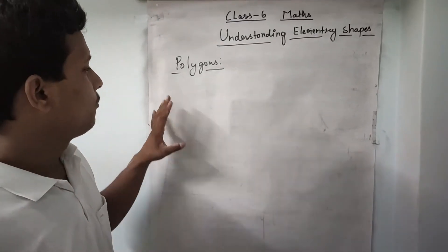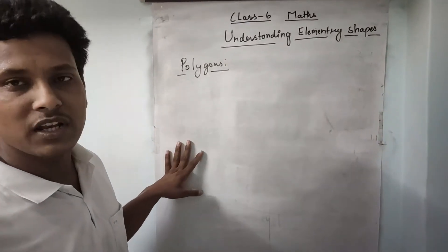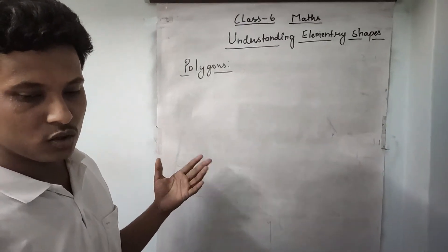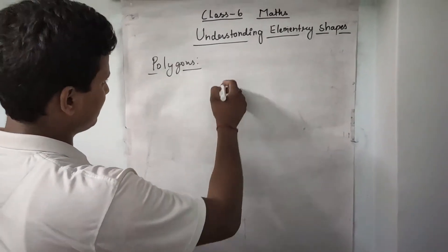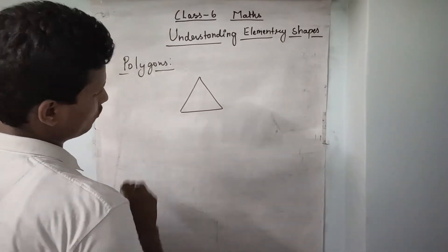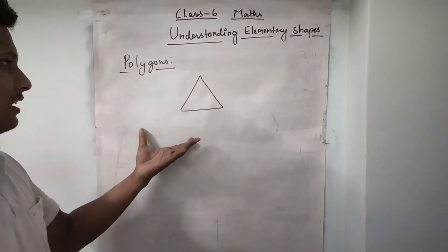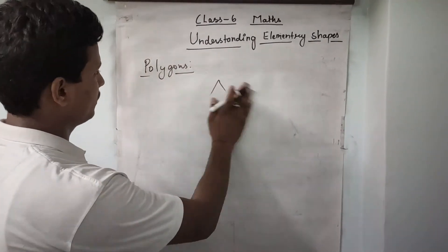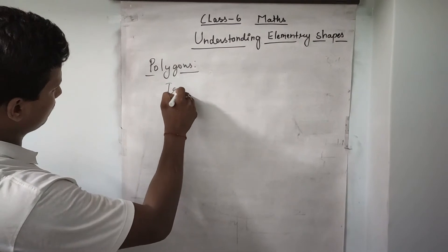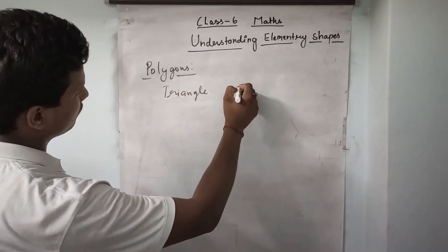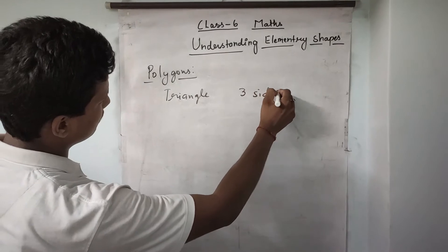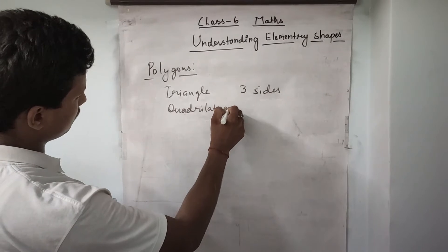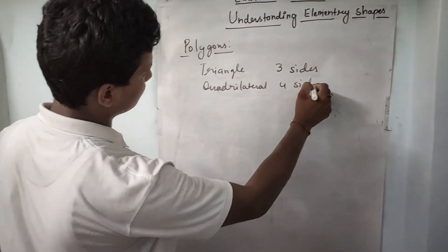The next topic is polygons. A polygon is a simple closed figure having at least three sides. Like a triangle — it has three sides, so it is a polygon. Triangle is the basic polygon with three sides. Next is quadrilateral with four sides.